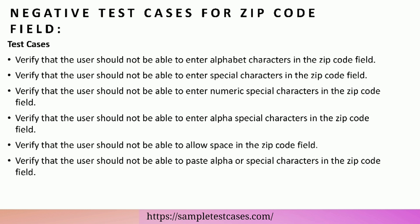Negative Test Cases for Zip Code Field. Verify that the user should not be able to enter alphabet characters in the zip code field. Verify that the user should not be able to enter special characters in the zip code field. Verify that the user should not be able to enter numeric special characters in the zip code field. Verify that the user should not be able to enter alpha special characters in the zip code field. Verify that the user should not be able to allow space in the zip code field. Verify that the user should not be able to paste alpha or special characters in the zip code field.